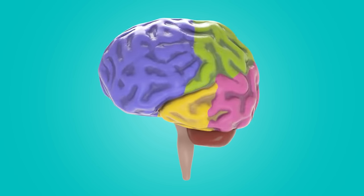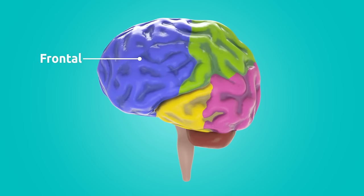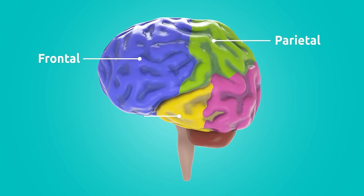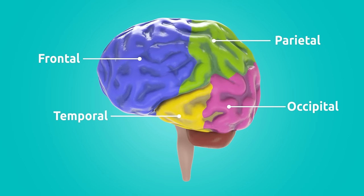Both hemispheres consist of four lobes: frontal, parietal, temporal, and occipital. Each one carries out different brain functions.